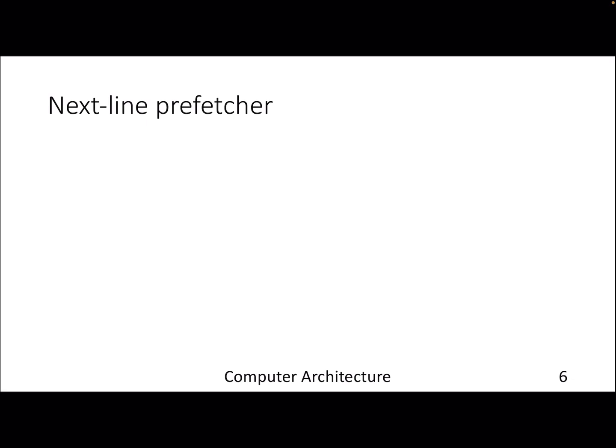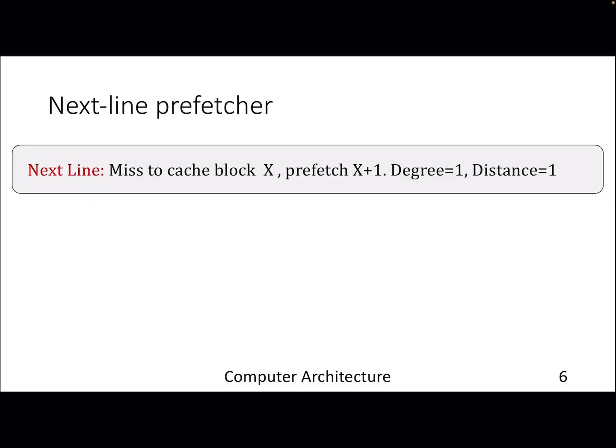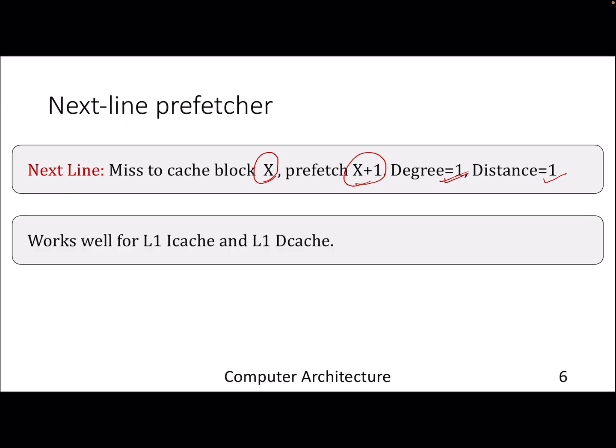One simple prefetcher is called the next-line prefetcher. The prefetcher doesn't learn anything. Whenever it gets an access or miss to block address or line address x, it just prefetches the next line. It will work well if your application has good locality and you're running through a loop, but it may not work well all the time. Next-line prefetcher has degree one because you're prefetching only one request at a time, and distance is always one. Mostly you will find this kind of prefetchers at the private L1 instruction and data caches because they are closer to processor and most likely will get a high amount of spatial locality.